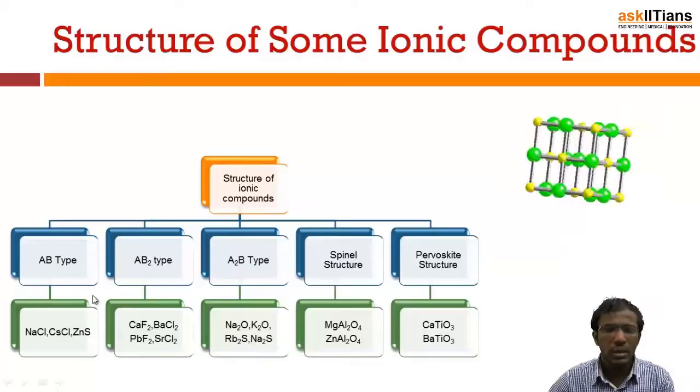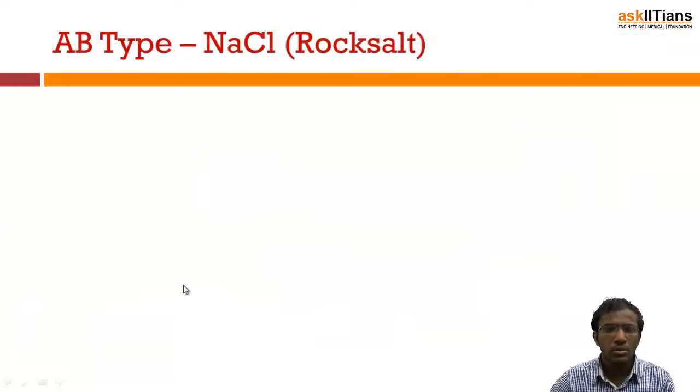So let's start with the AB type structure. Under AB type, we have one which is very important, that is NaCl, sodium chloride, which is also known as rock salt. Let's study about the structure of sodium chloride: how the sodium ions and chloride ions are arranged, what is the coordination number of cation as well as anion, and also the number of sodium ions per unit cell and the number of chloride ions per unit cell.